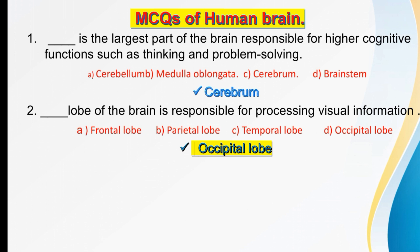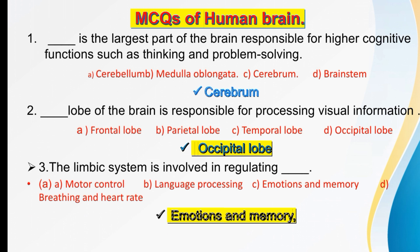The limbic system is involved in regulating dash. Options are: motor control, language processing, emotion and memory, or breathing and heart rate. The right option is emotion and memory. The limbic system is involved in regulating emotion and memory.